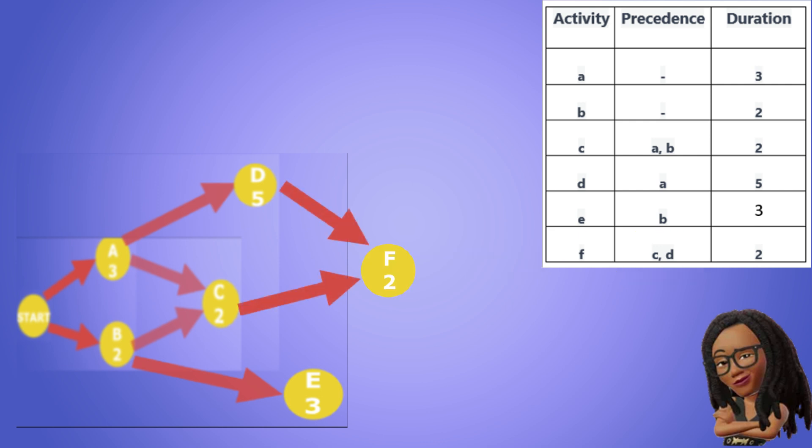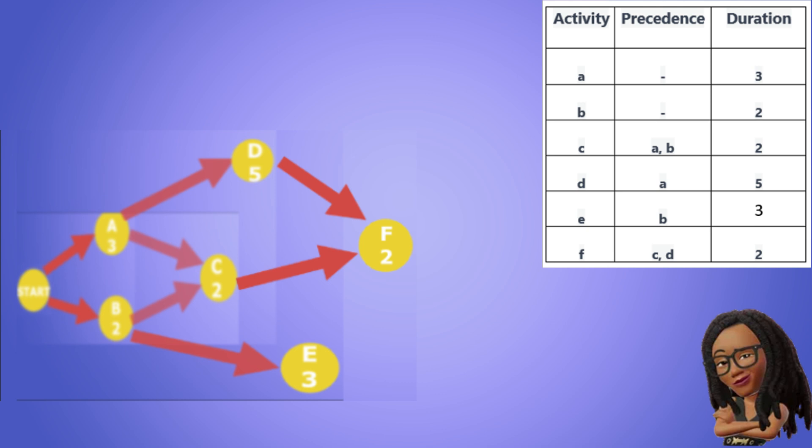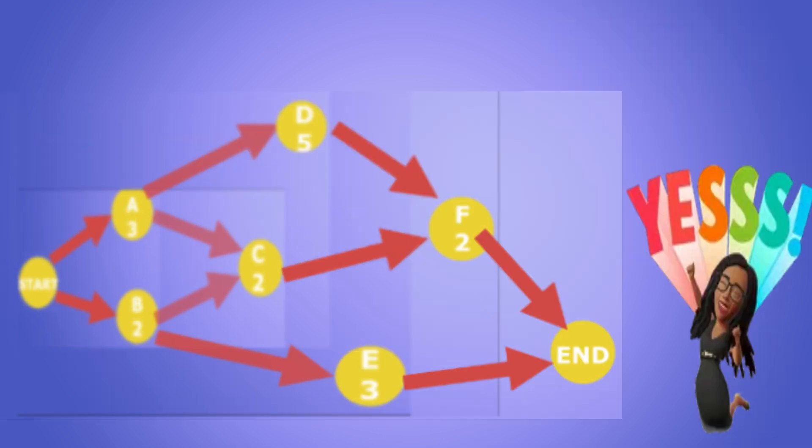Since there are no more activities, we can create an end node to represent the finish of the project. We connect F and E to the end node since neither has any successor activities. And there, step one is complete. We have drawn our activity on node diagram to represent our project.